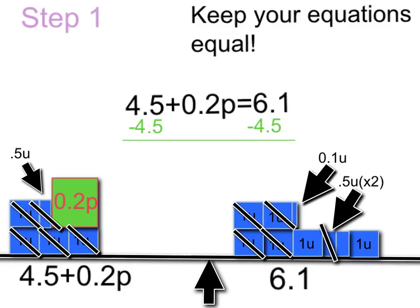Your goal in a two-step equation is to isolate the variable and have p equal something. Our first step in doing that is to get rid of the 4 and 5 tenths on the left side of the equation, so you're just left with 2 tenths p on the left side of the equal sign.